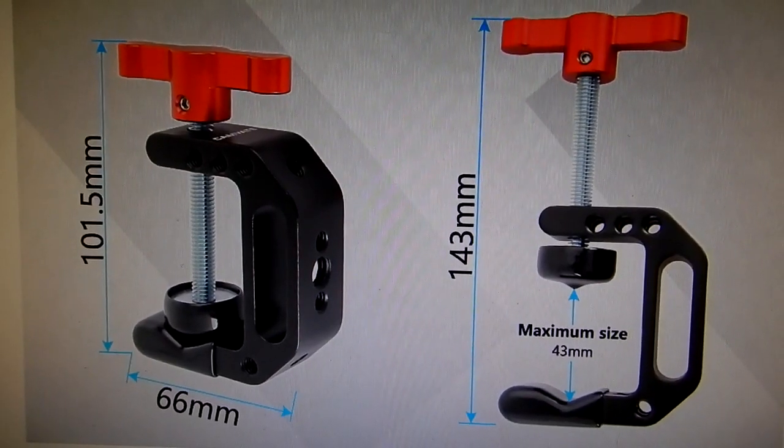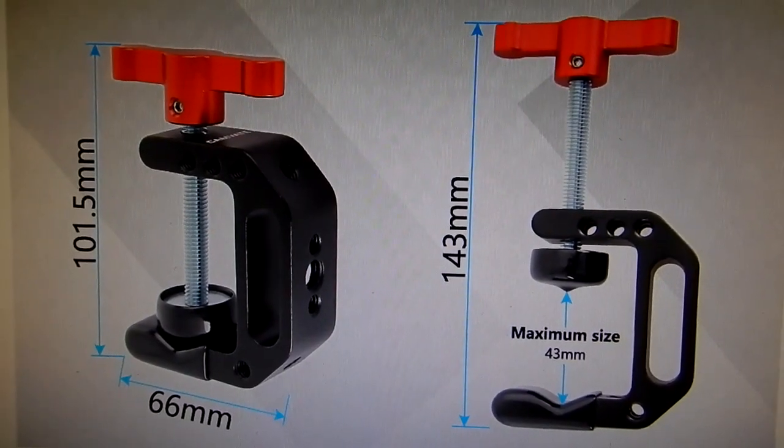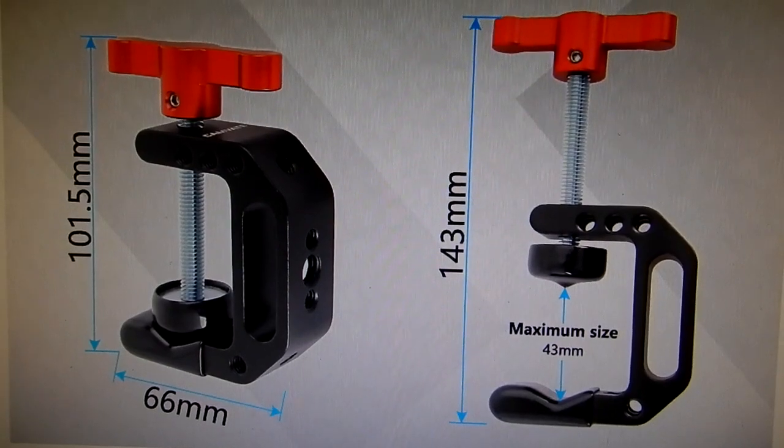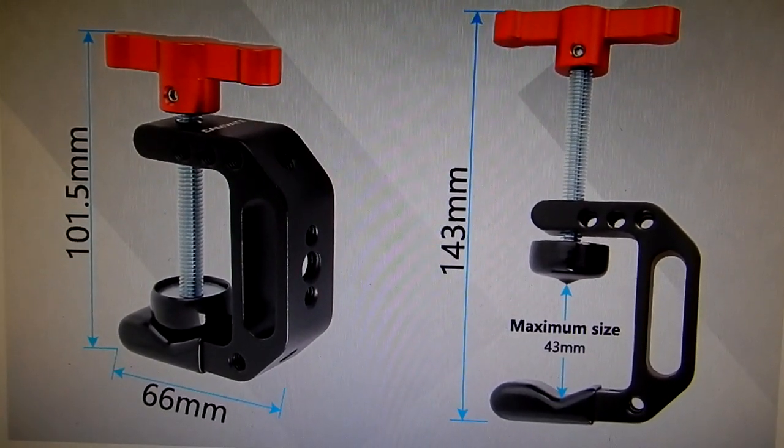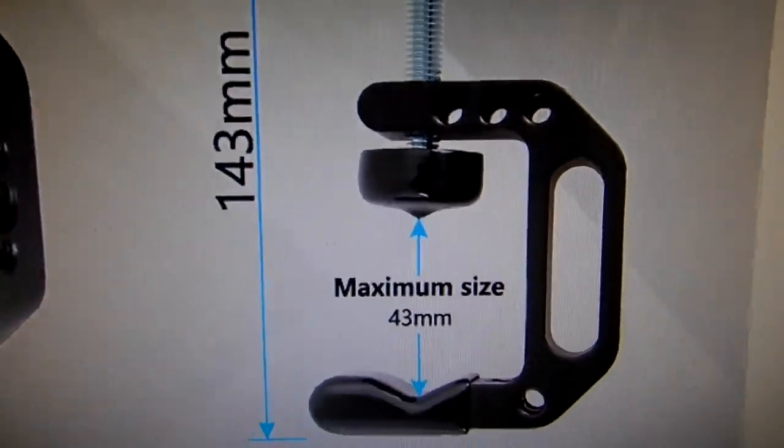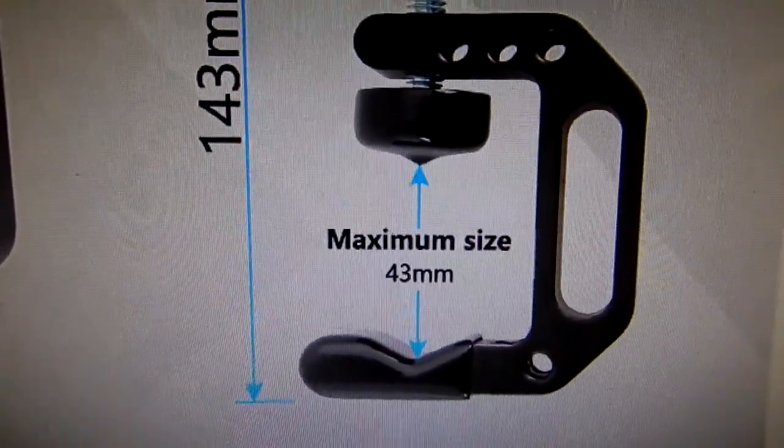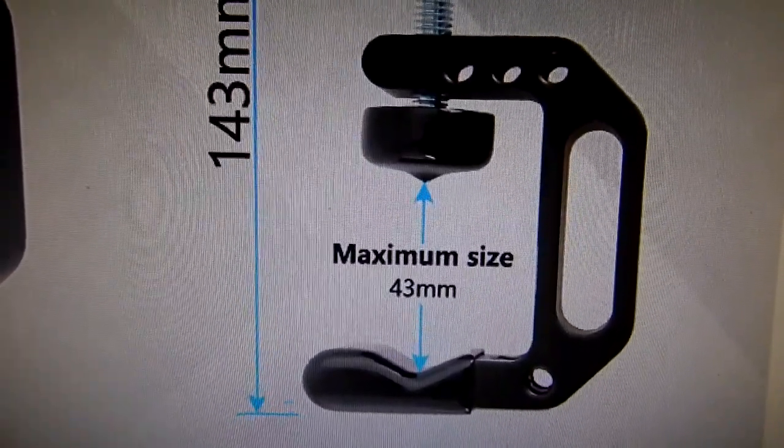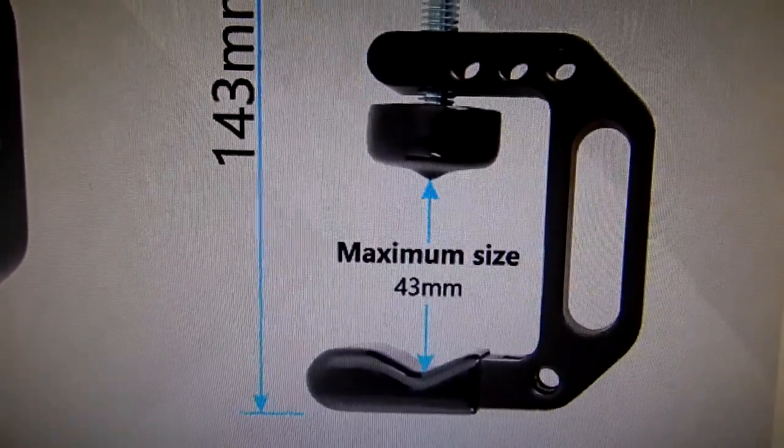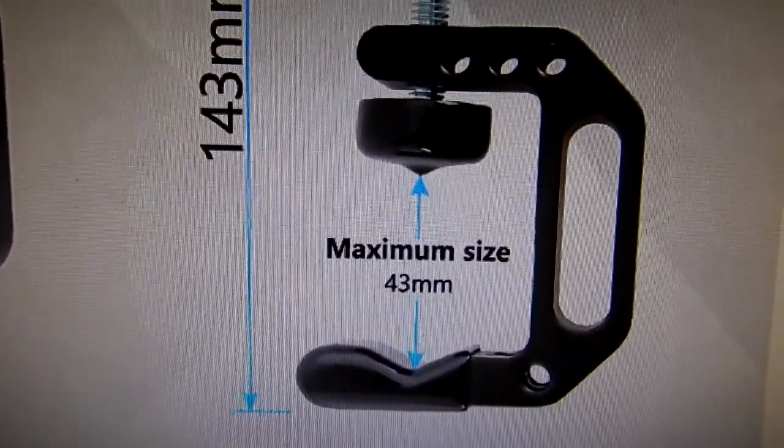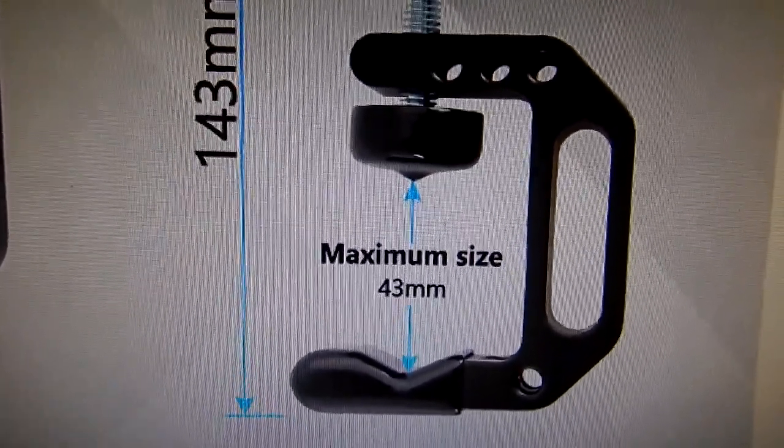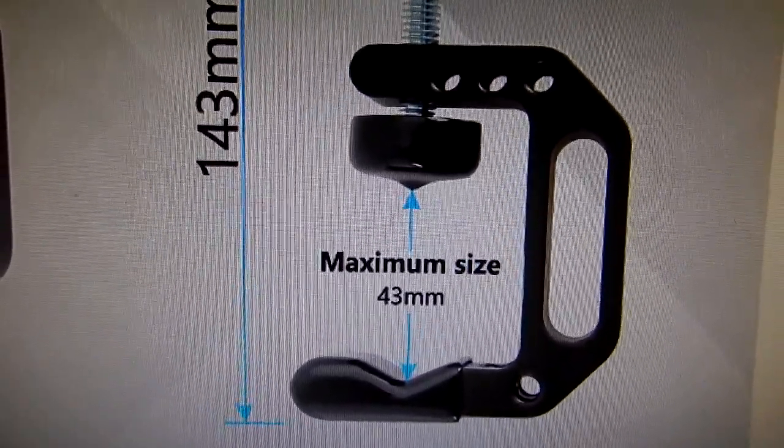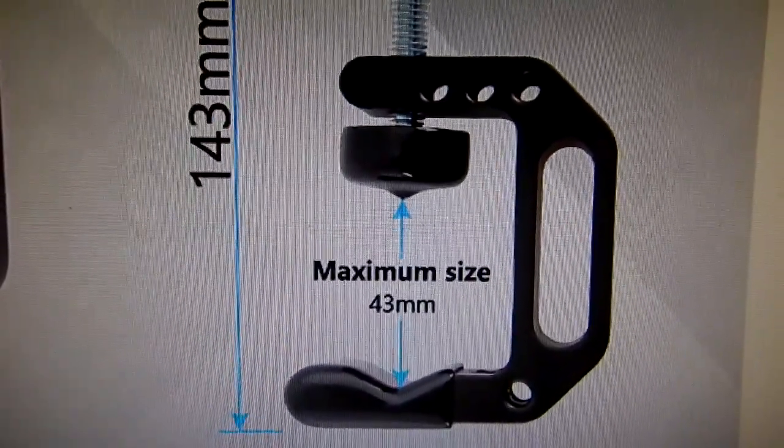Here on the website of Amazon we see the dimensions given by the manufacturer. Now these are all in millimeters. So let's look at this. The maximum size opening, 43 millimeters, divide that by 25.4, that's the factor. 43 divided by 25.4 will give you 1.6929 etc. And so basically 1.69 inches. So you'll easily be able to clamp this onto a 2x4.